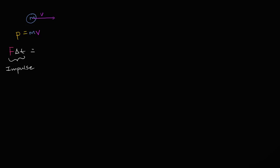Impulse is equal to change in momentum. So if you don't have any impulse — especially if you don't have any net force acting on an object — its momentum is going to be constant. You have a conservation of momentum. We use that idea in all sorts of interesting physics applications, especially in cases using billiard balls and whatever else. Now let's try to take a similar idea but go into the rotational world.